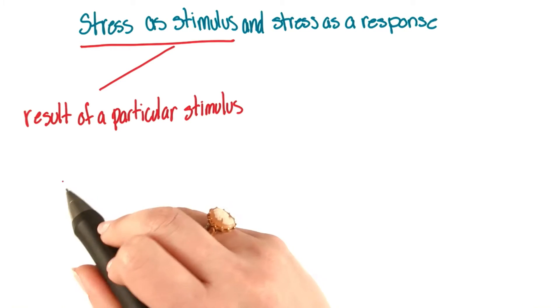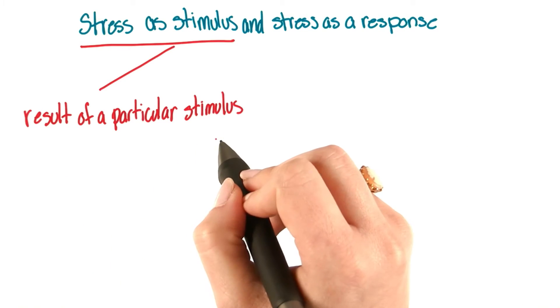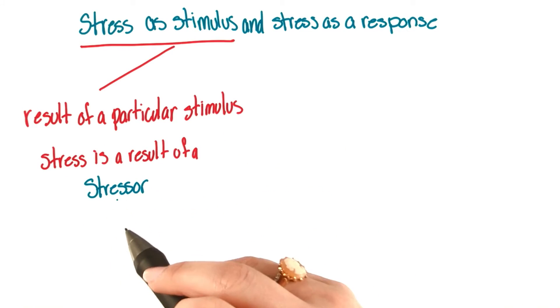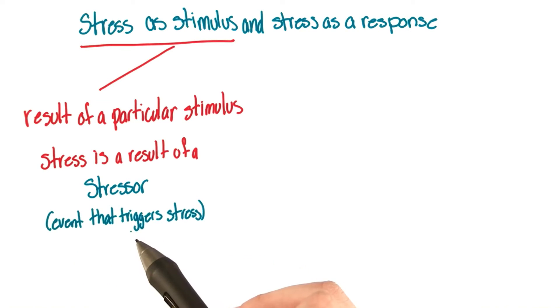This looks at stress as the result of a particular stimulus. Here, we're saying that stress is the result of a stressor. In other words, an event that triggers stress.